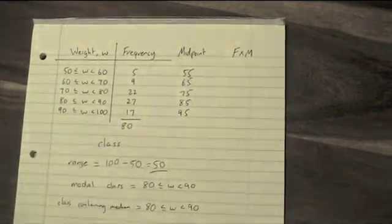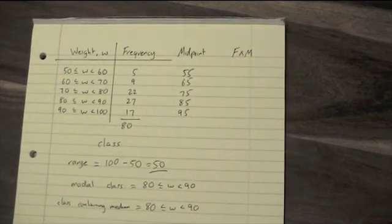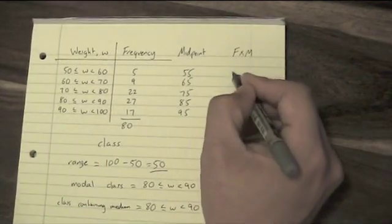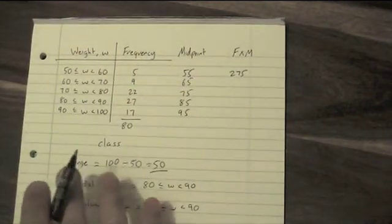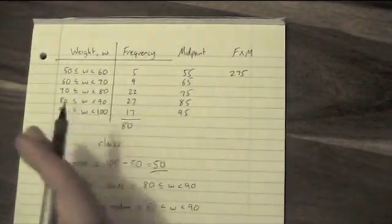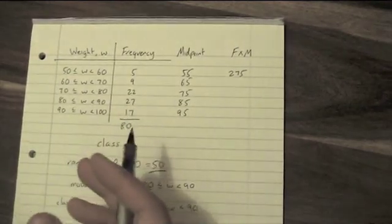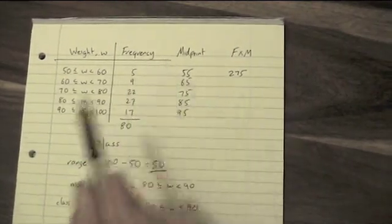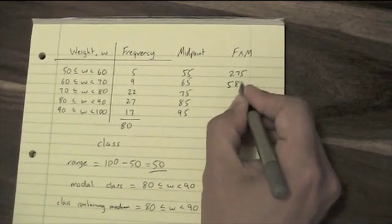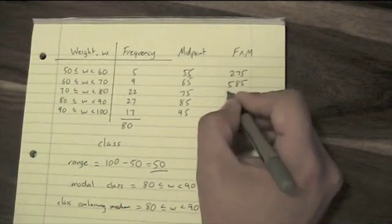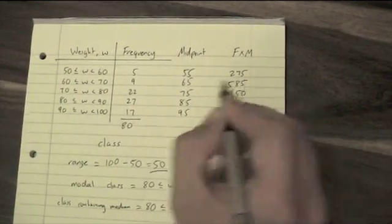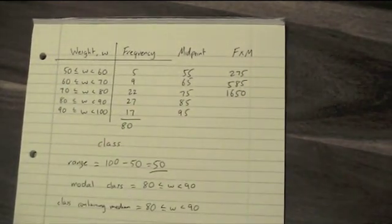We're going to do 5 lots of 55. 5 lots of 55 is 275. You can have a calculator for this; you wouldn't be asked to do a question like this on a non-calculator paper. 9 times 65 is 585. 22 times 75 is 1650.